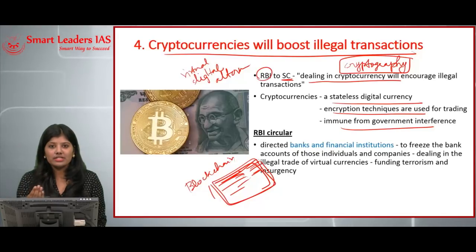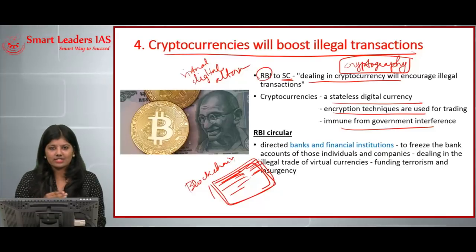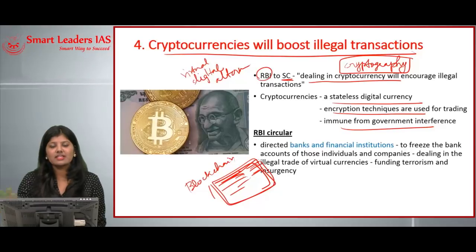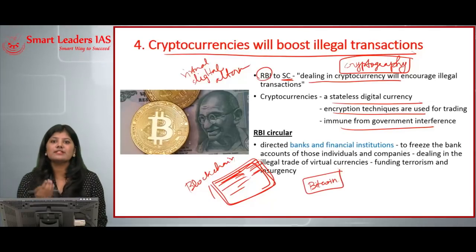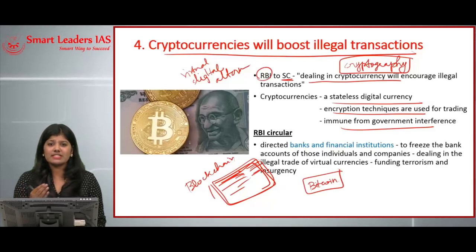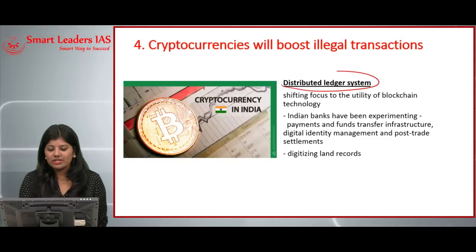No legal tender does not mean cryptocurrency is illegal — it means it is not recognized as a medium of exchange. Our normal rupee notes are fiat currencies and are legal tender, but cryptocurrencies are not. The best example is Bitcoin, the world's first decentralized virtual currency released in 2008. Other examples include Litecoin and BBQ coin — there are 700+ cryptocurrencies existing worldwide.